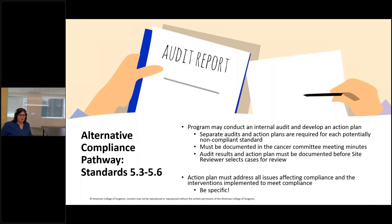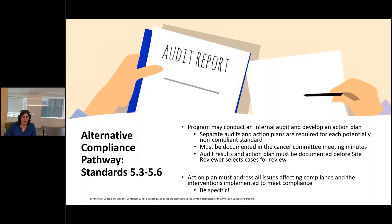Understanding that these are new standards, programs may conduct an internal audit and develop an action plan for any standards where they're struggling with compliance. If this pathway is chosen, separate audits and action plans must be done for each noncompliant standard, although solutions may overlap across disease sites. These audits and action plans must be documented in Cancer Committee minutes before the site reviewer selects cases for review. The site reviewer will still conduct the medical record review; if below the 70% threshold, they can then assign a deficient but resolved rating.